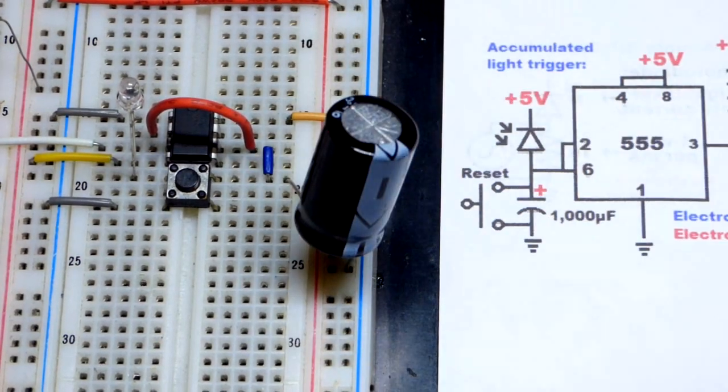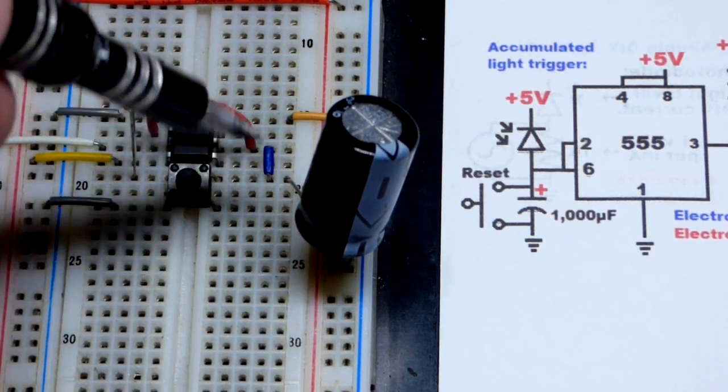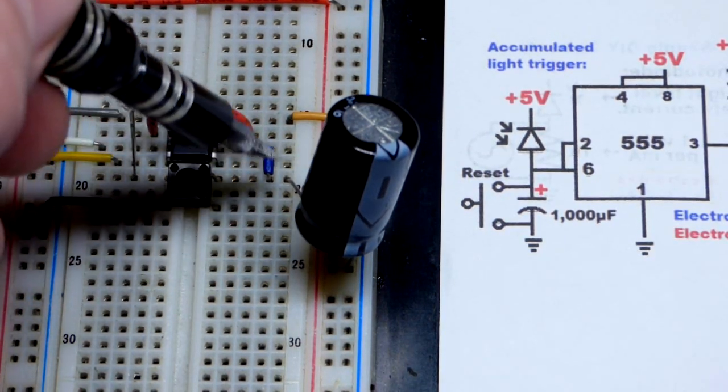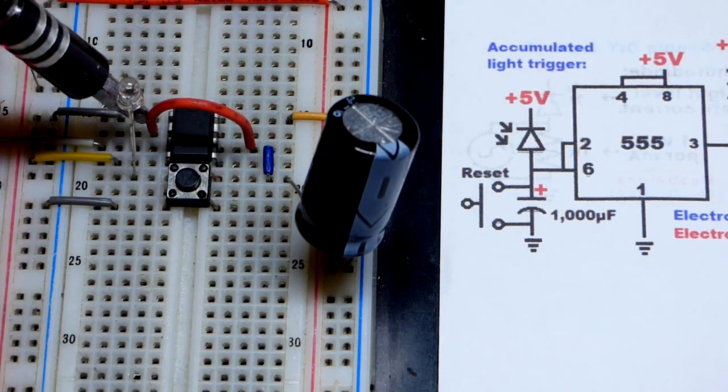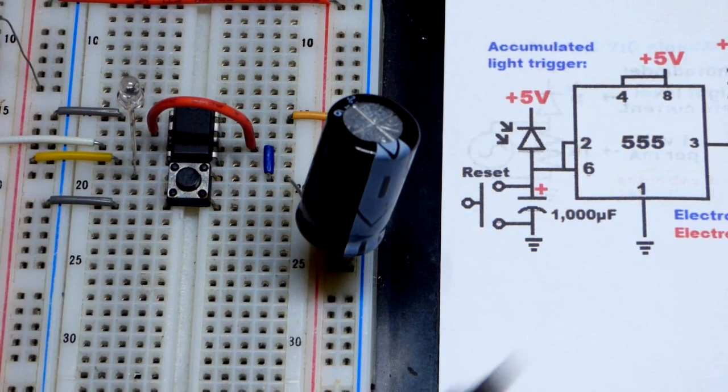The top of the switch is also connected via this little jumper, so now also the capacitor to pin number six there, the threshold pin, and pin number two, the trigger pin right there. As you can see, they're monitoring the voltage - that's what they do - of the capacitor.